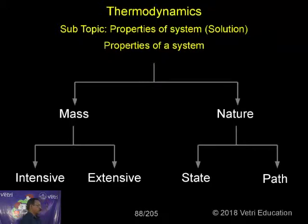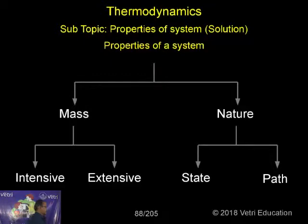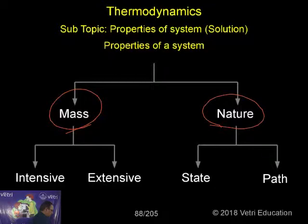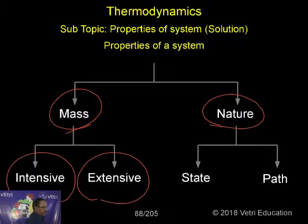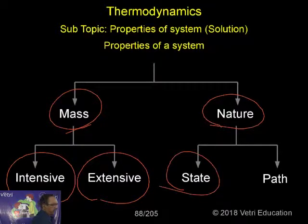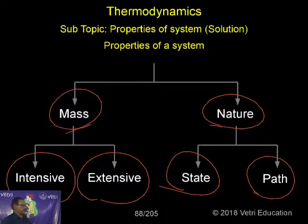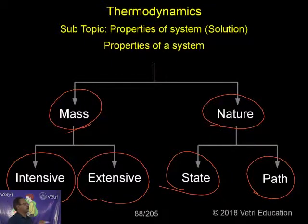Let me give some explanation. The properties can be classified based on mass or based on nature. Based on nature, we classify into intensive property and extensive property. Based on nature, we also classify into state property and path property. Intensive property is independent of mass. Extensive property depends on mass. State property depends on the state, and path property depends on the path.